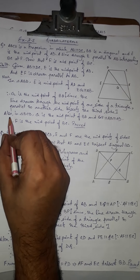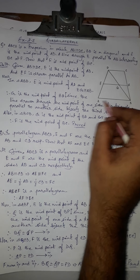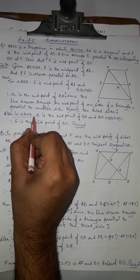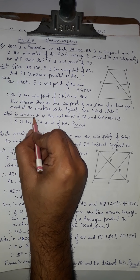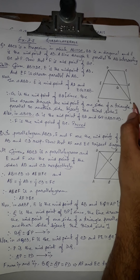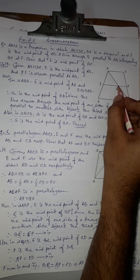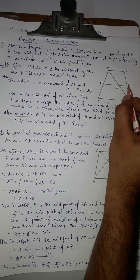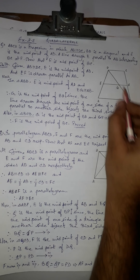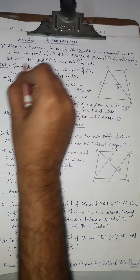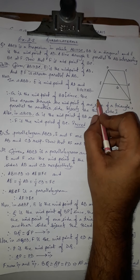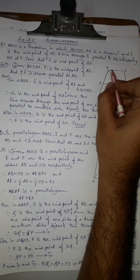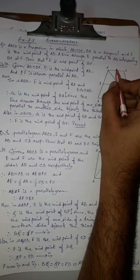Now, similarly for triangle BCD, we apply the converse of the midpoint theorem. G is the midpoint of BD, and GF is parallel to AB. Since AB is parallel to DC — as given that AB is parallel to DC — GF is also parallel to CD.